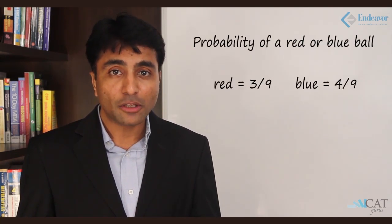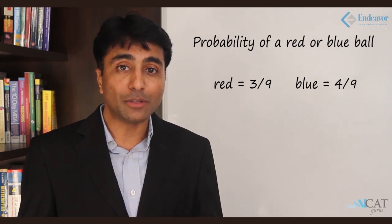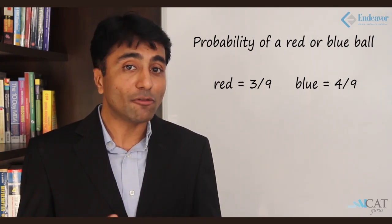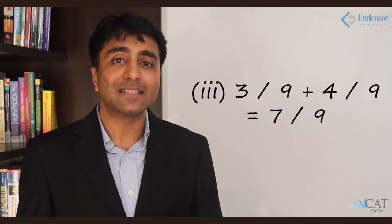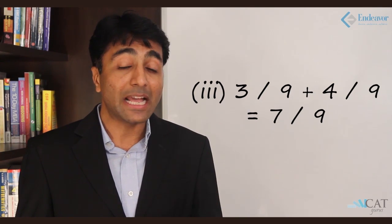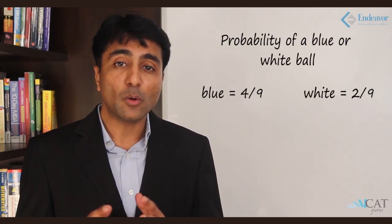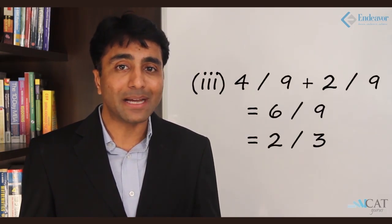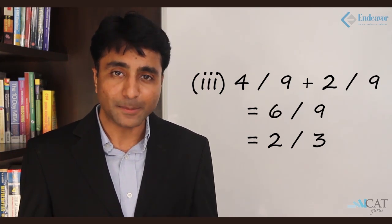Third case — getting either a red or a blue ball. There are 3 red balls, so 3 by 9, and 4 blue balls, so 4 by 9. Adding these gives 3 by 9 plus 4 by 9, that is 7 by 9. Fourth case — getting either a white or a blue ball. The probability is 4 by 9 plus 2 by 9, that is 6 by 9, or 2 by 3.